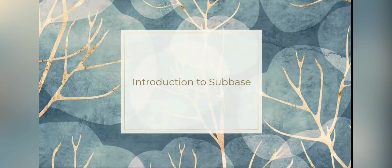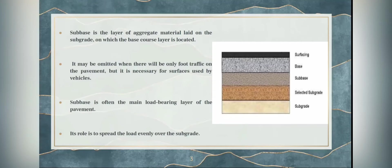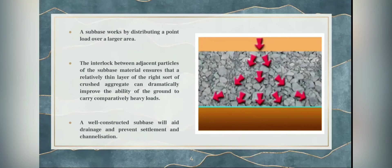Introduction to sub-base. Sub-base is the layer of aggregate material laid on the sub-grade on which the base course layer is located. It may be omitted when there will be only foot traffic on the pavement, but it is necessary for surfaces used by vehicles. Sub-base is often the main load-bearing layer of the pavement, and its role is to spread the load evenly over the sub-grade.